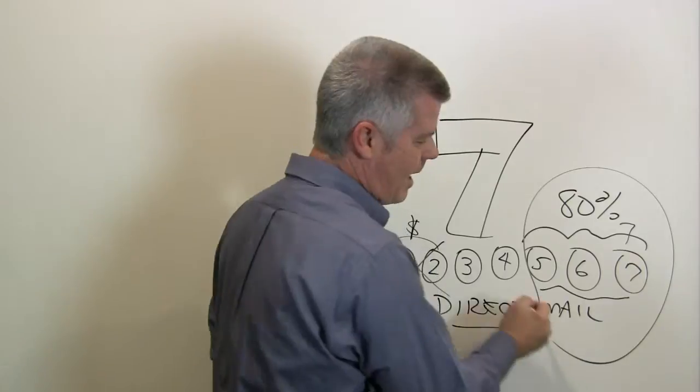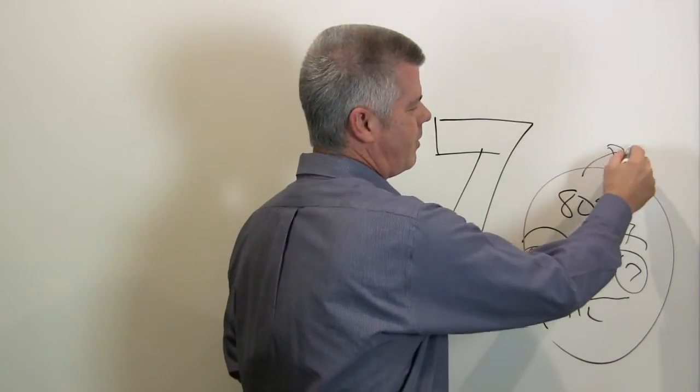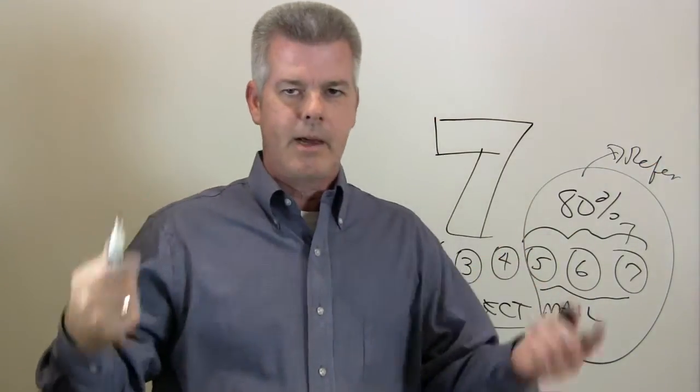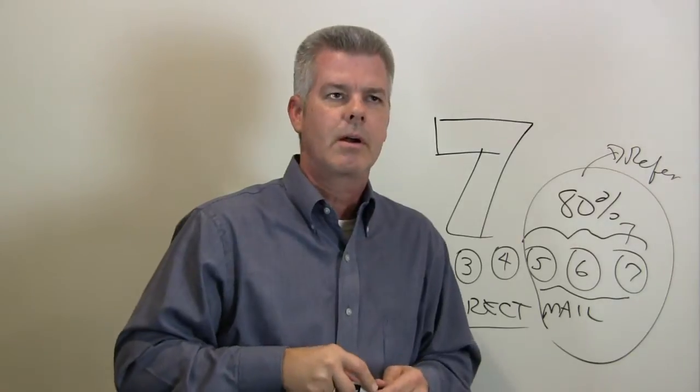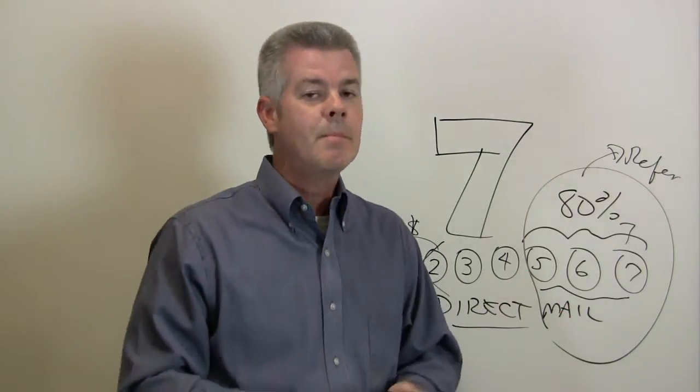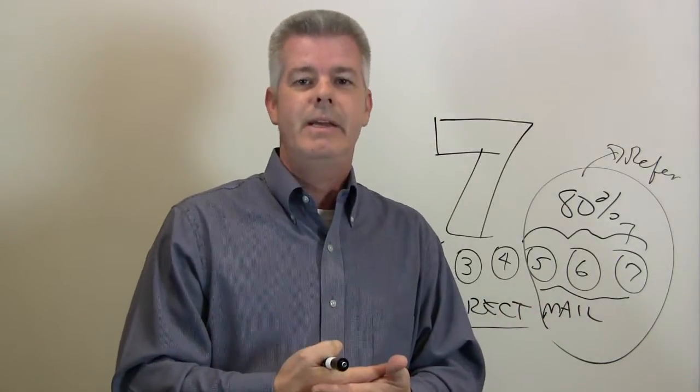And the other thing that happens in this outer side of the cycle is they begin to refer, because basically what's happening is they're recalling now. So it's not about the postcard. A lot of us think that direct mail is a direct response. Well that's true, you get a postcard and it's kind of serendipitous if you get a postcard and it says we buy houses.